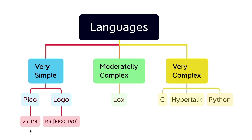In Pico, you can enter source code like 2 plus 11 times 4, and the program would scan it, parse it, and then evaluate it. In Logo, you can enter source code like repeat 3 forward 100 turn 90, and the program would scan it, parse it, and evaluate it, making a turtle on the screen go forward 100 pixels, turn 90 degrees, and repeat that three times.